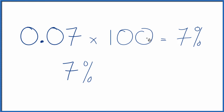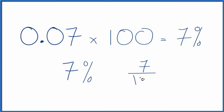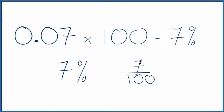So you can multiply by 100 or you can move the decimal point two places to the right. Keep in mind that 0.07, the decimal, is equal to the fraction seven over 100. We have a number over 100, we call that 7 percent.